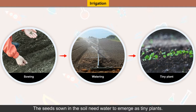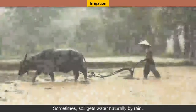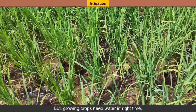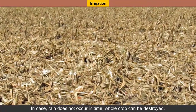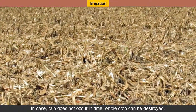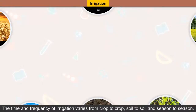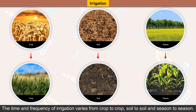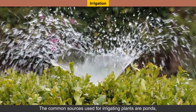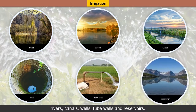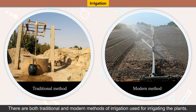Sometimes soil gets water naturally by rain, but growing crops need water at the right time. In case rain does not occur in time, the whole crop can be destroyed. In such cases, watering plants is done by artificial methods. The time and frequency of irrigation varies from crop to crop, soil to soil and season to season. The common sources used for irrigating plants are ponds, rivers, canals, wells, tube wells and reservoirs. There are both traditional and modern methods of irrigation used for irrigating the plants.